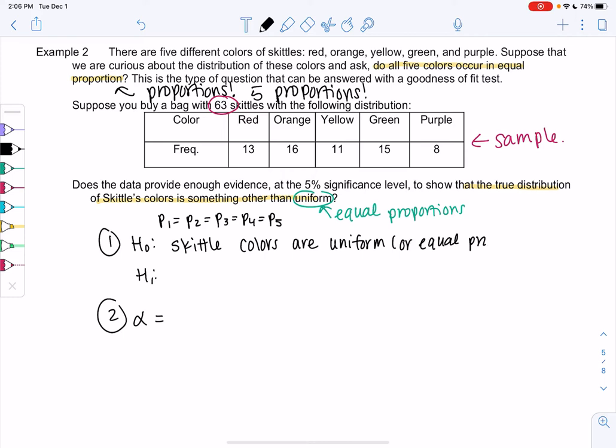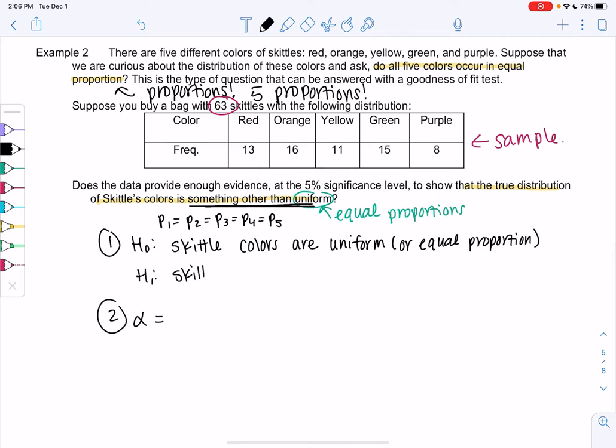And then what we're trying to prove is that it's not uniform. Skittle colors are not uniform or not the same proportion. It could be that they're all different, or it could just be two of them are different. So that's why we don't write it in math form. So alpha is just our significance level, which is 5%, so 0.05.